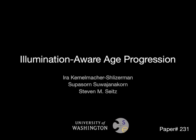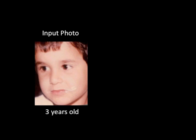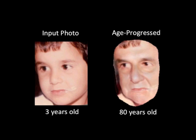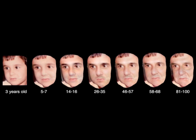We present a technique to age-progress any input photo taken in the wild with unknown imaging conditions. Given a photo of a child, we produce an age-progressed version of this photo, and other ages as well.